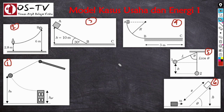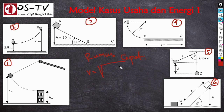Pada dasarnya, semua kasus ini dapat diselesaikan dengan prinsip hukum kekekalan energi mekanik, tetapi cara ini memerlukan waktu yang relatif panjang. Untuk semua kasus ini terdapat rumus cepat, yaitu V = √(2GH). Di sini V adalah kecepatan benda pada posisi tertentu, G adalah percepatan gravitasi, dan H adalah ketinggian atau perbedaan posisi benda dari satu keadaan ke keadaan lain.